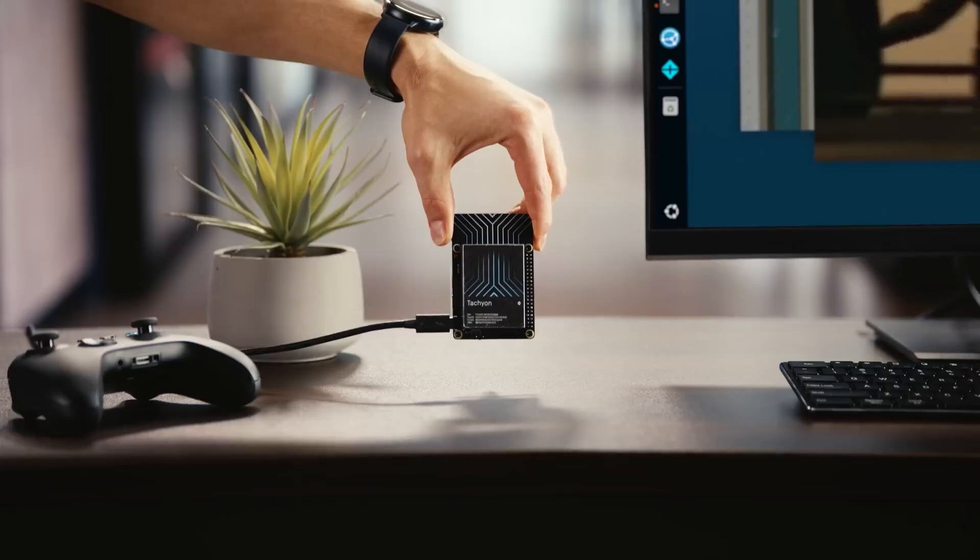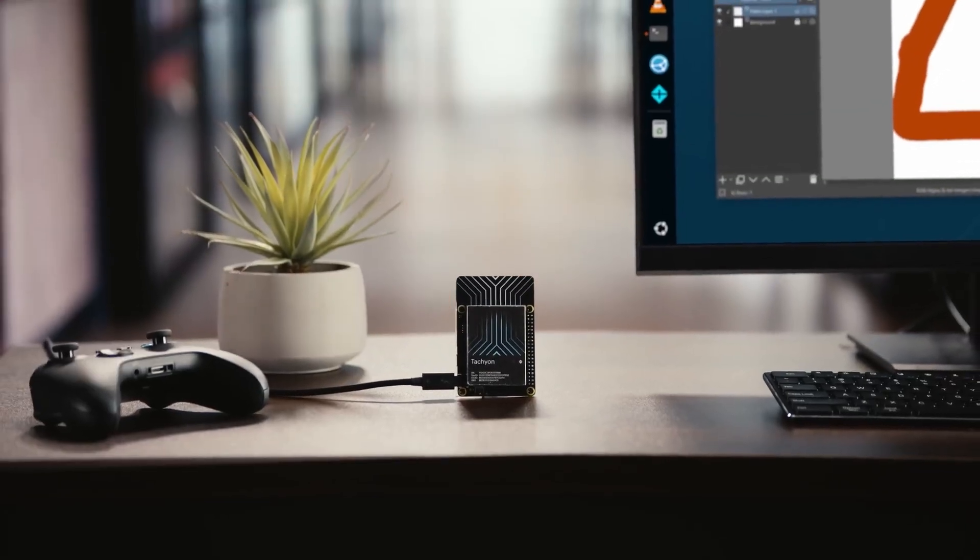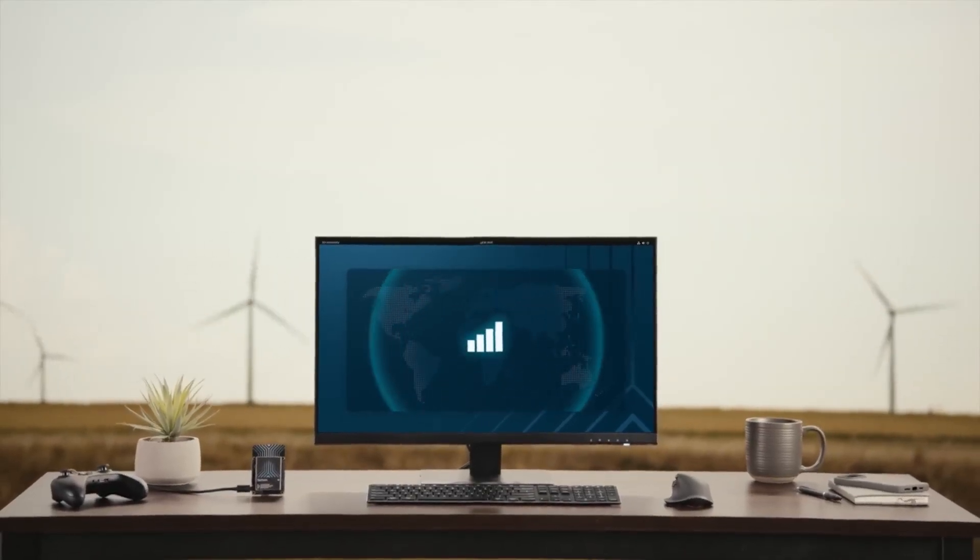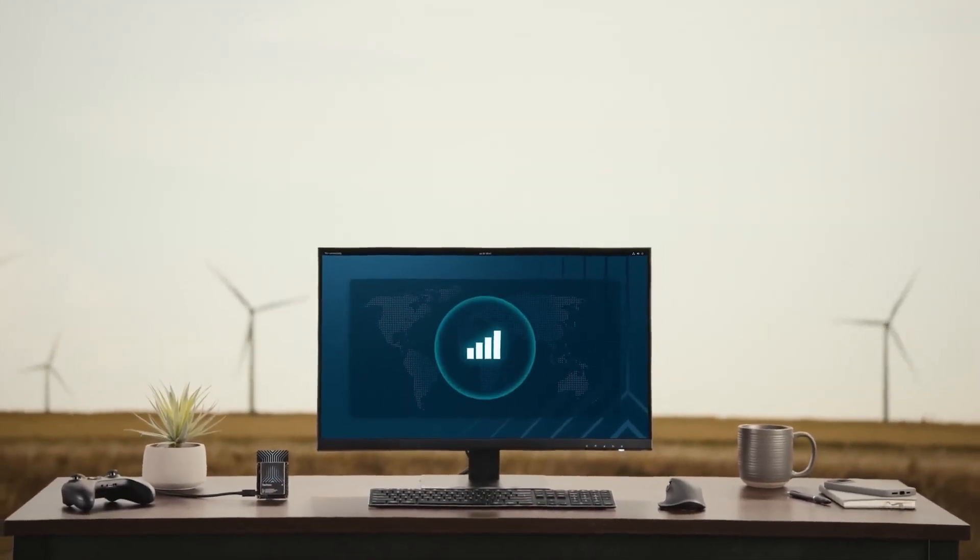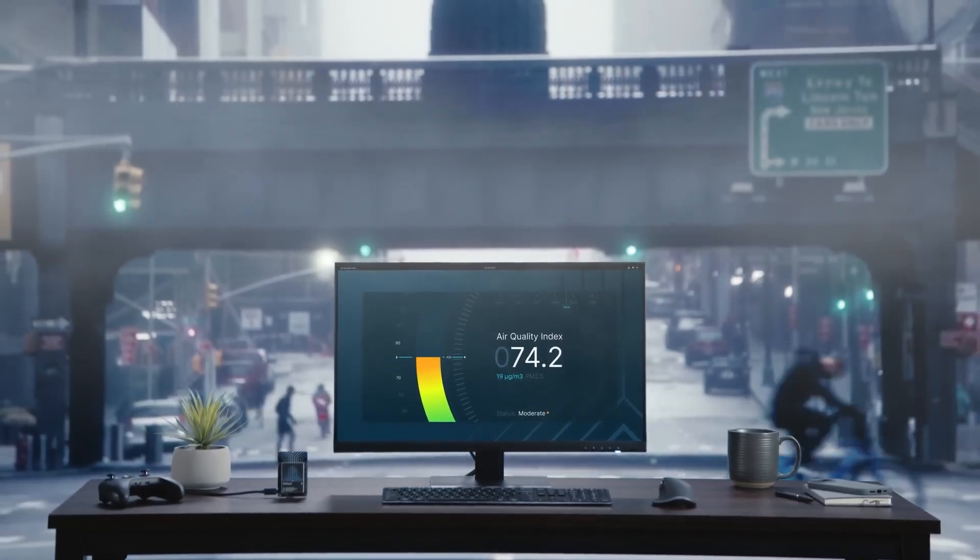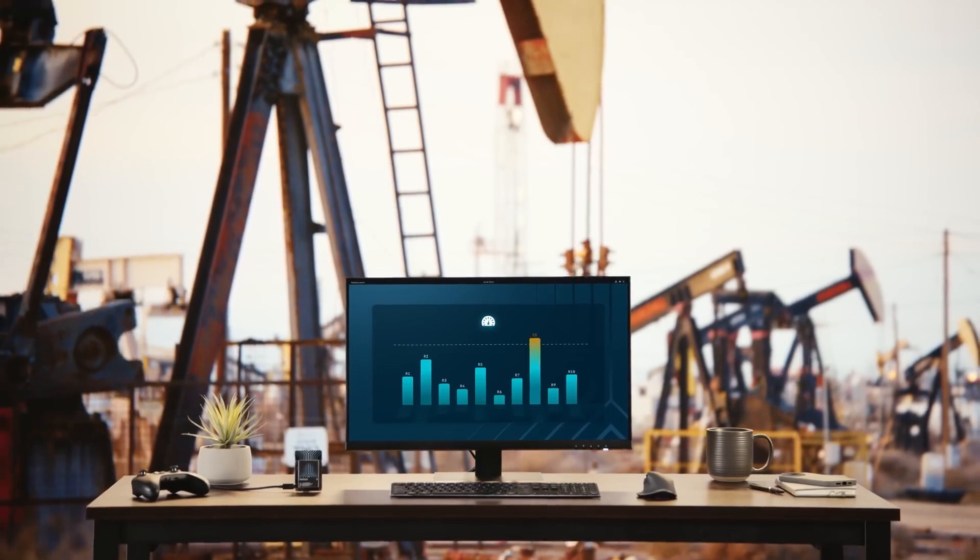There are a lot of Raspberry Pi competitors out there, but the Tachyon really does have some specs that set it apart. The first, for me, is an integrated cellular 5G connection. It's something you'd expect from an IoT company like Particle, of course, but it's a rare sight on a single-board computer.